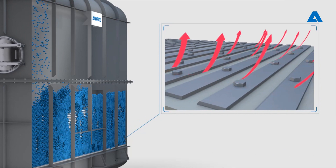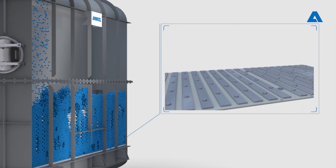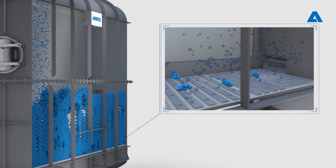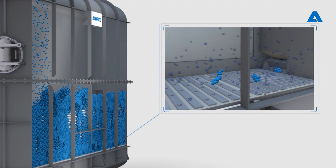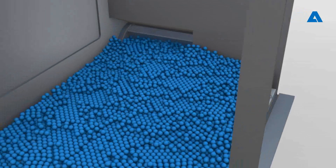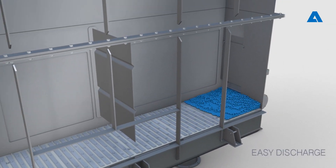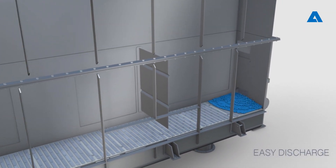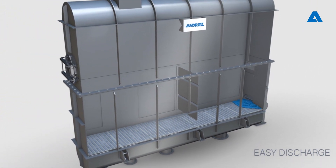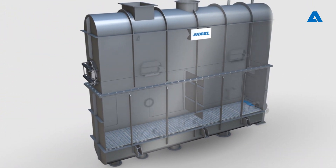The directed flow of air pushes larger agglomerates from the product feed zone towards the product discharge opening. In the event of longer shutdowns, the product can be discharged through the underflow rotary valve. The directed flow from the air distribution plate enhances product discharge.